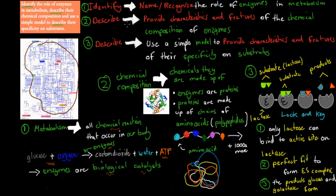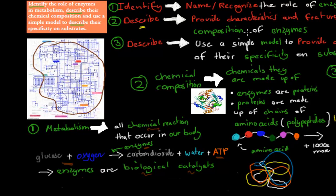The second part used the verb 'describe', which means provide characteristics and features of the chemical composition of enzymes. Chemical composition just means what kind of chemicals enzymes are made up of. Enzymes are proteins — that's really important to know. This is an example of an enzyme, which is a protein. You need to know the characteristics.